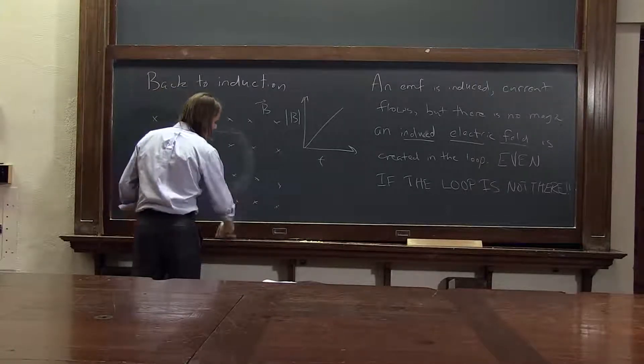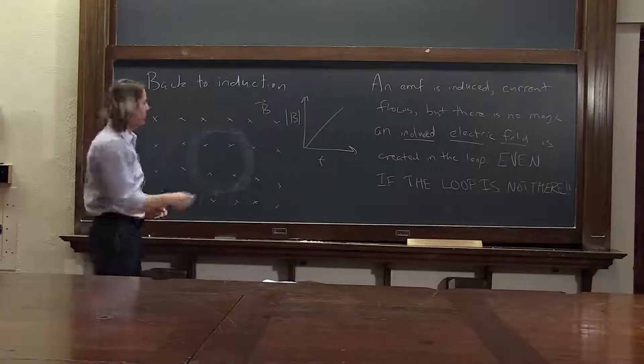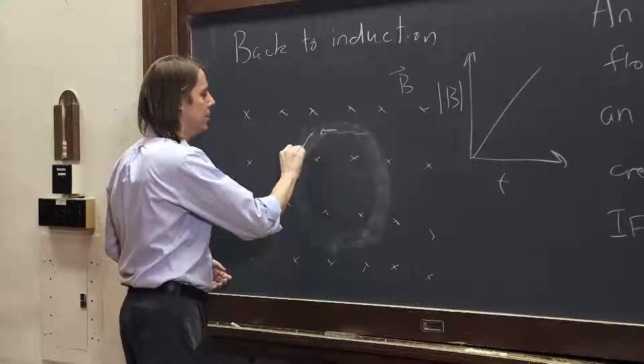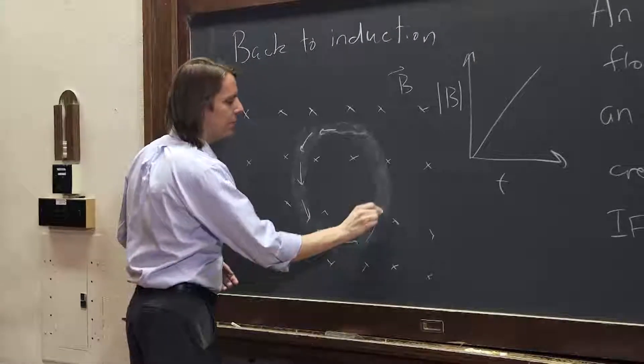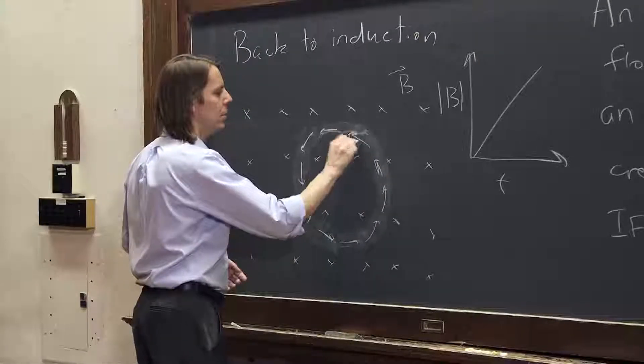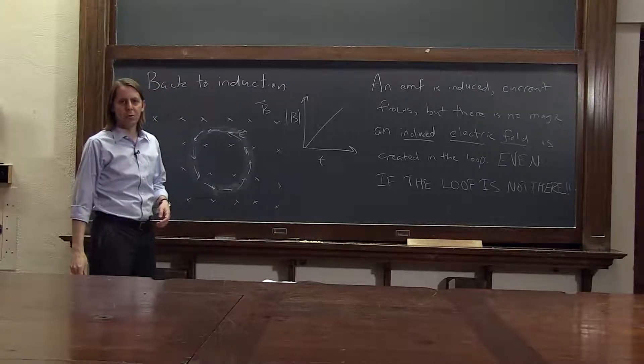If there's no loop there, there's no charge carriers there, it doesn't matter. It still creates an electric field around this loop. There is a real electric field in that loop.